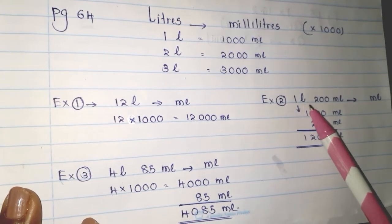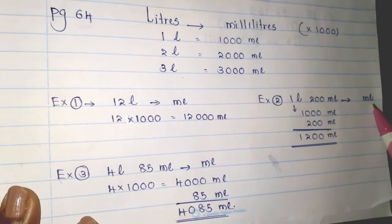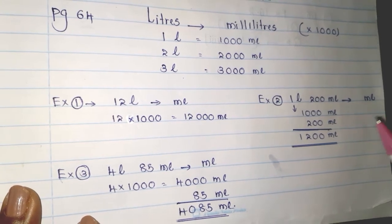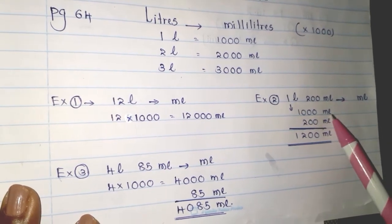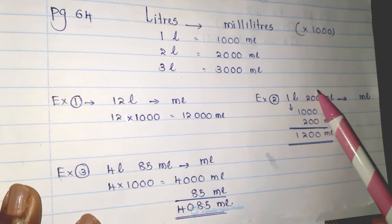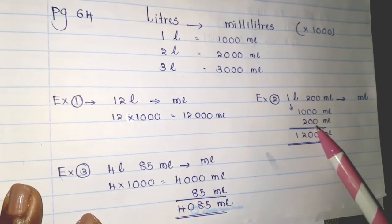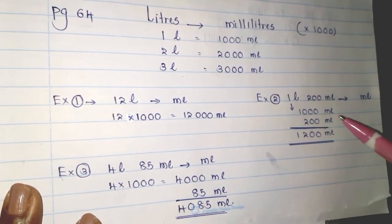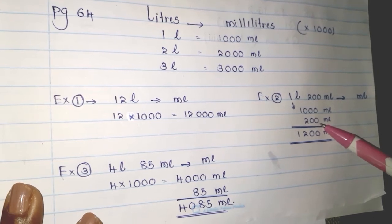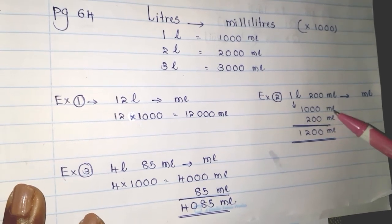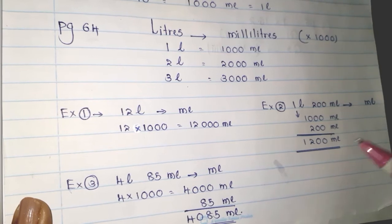Example 2: 1 liter 200 milliliters — you have to convert into milliliters. 1 liter equals 1000 milliliters. The 200 milliliters is already given, so you write milliliters: 1000 milliliters plus 200 milliliters. When you add, it is equal to 1200 milliliters.